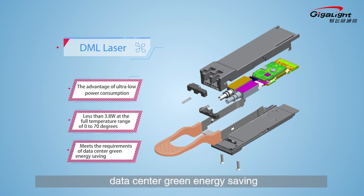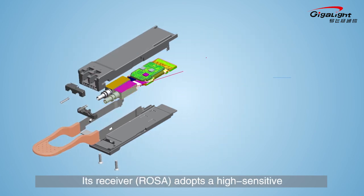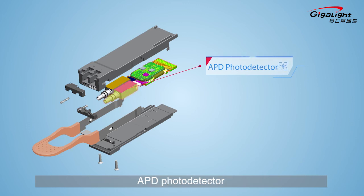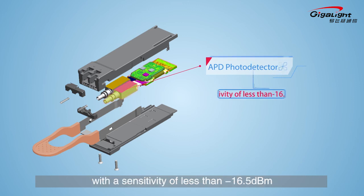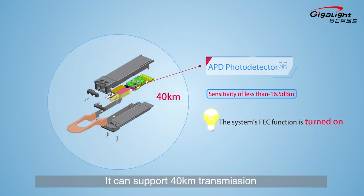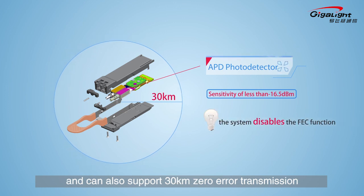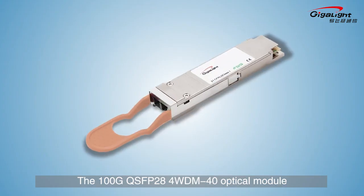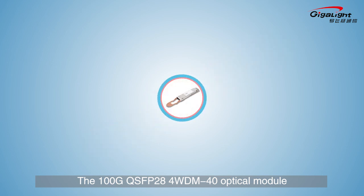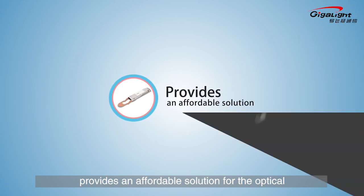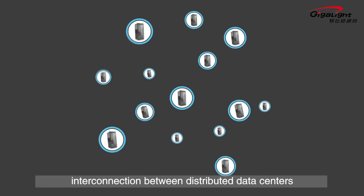This meets the requirements of data center green energy saving. Its receiver adopts a high-sensitivity APD photo detector with a sensitivity of less than -16.5 dBm. It can support 40 km transmission when the system's FEC function is turned on, and can also support 30 km zero-error transmission when the system disables the FEC function. The 100G QSFP28 4WDM40 optical module provides an affordable solution for optical interconnection between distributed data centers.